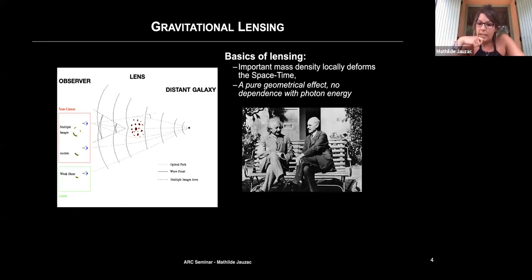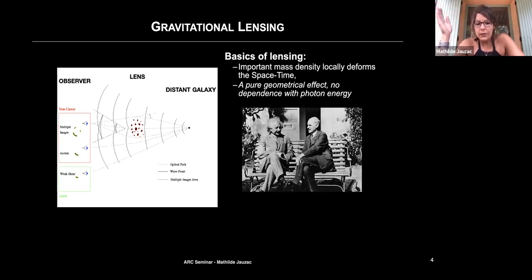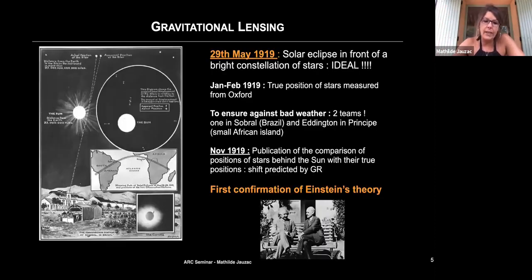On the right-hand side of the slide is Einstein and Eddington sitting on a bench in Cambridge in 2019. I'm putting this picture here because lensing was predicted by General Relativity, based on the assumption that an imparted mass density locally deforms spacetime. It's purely geometrical, has no dependence on photon energy — but this was just a hypothesis back then. Eddington in 1919 was the first to confirm the lensing hypothesis, and that was also the first observational confirmation of GR.